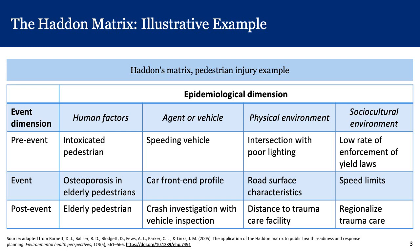Now let's talk about post-event factors, the bottom row of the table. Human post-event factors could involve an elderly pedestrian with pre-existing comorbidities or underlying illness who may take longer to convalesce following a pedestrian injury than someone without pre-existing health conditions. Under the agent or vehicle column for post-event, crash investigation with vehicle inspection is an important post-event action to identify what contributed to the pedestrian injury event.